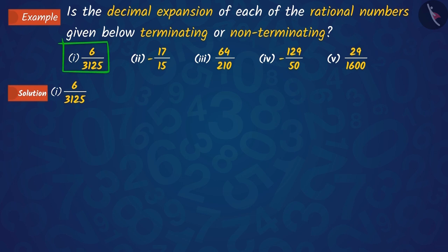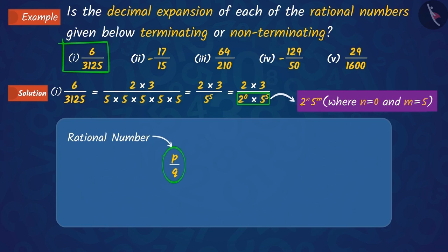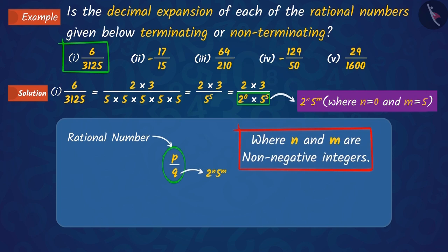If we factorise both the numerator and denominator of this first rational number, we find that the denominator is in the form of 2 raised to n into 5 raised to m. In our previous video, we learnt that in a rational number p upon q, if q is in the form of 2 raised to n into 5 raised to m, where n and m are non-negative integers, then the decimal expansion of the number is terminating.